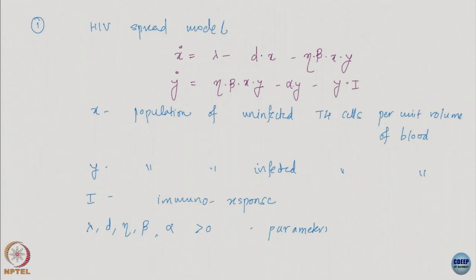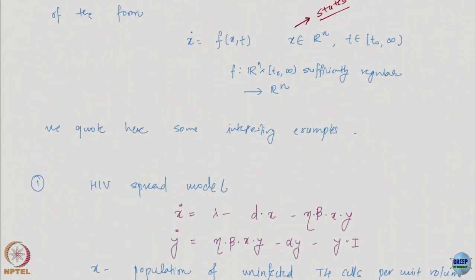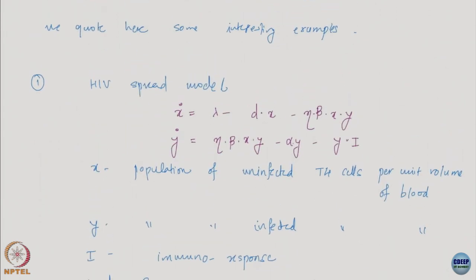If you can push a drug which will accentuate the immune response, then you have a control. This system is clearly nonlinear. How do we say a system is linear or nonlinear? Homogeneity and the superposition principle. The right-hand side function f must satisfy the superposition principle for the system to be linear. If not, it is a nonlinear system — and easy to identify, because here I have a product of x and y.